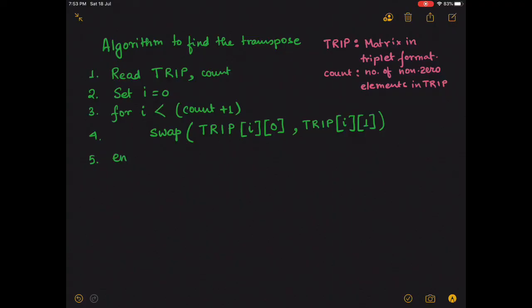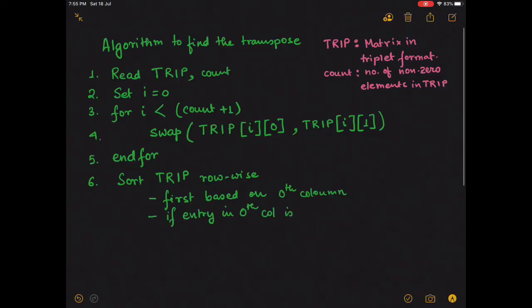With that we come to the end of the for loop and the next only step remaining is sorting the TRIP matrix. So in the next step we sort the TRIP matrix row wise. By row wise we mean first we will be sorting them based upon the 0th column entry of the rows, and if the entry in the 0th column is same we will look into the entry in the 1st column.